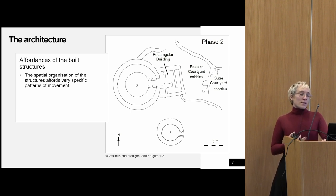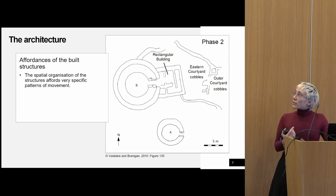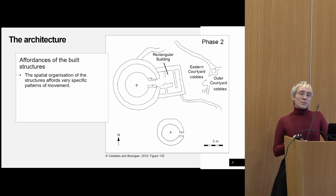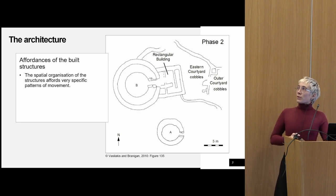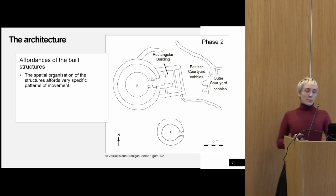It also means that Tholos A can be approached from all around, whereas Tholos B can only be approached from the front. These different afforded methods of approach would have resulted in different afforded practices for each tomb.